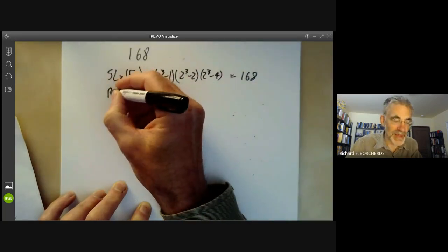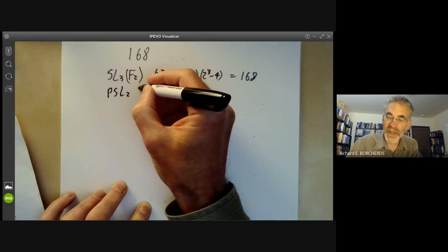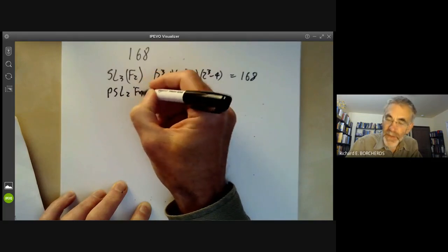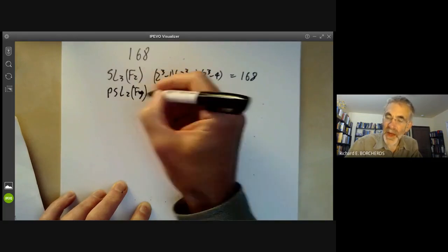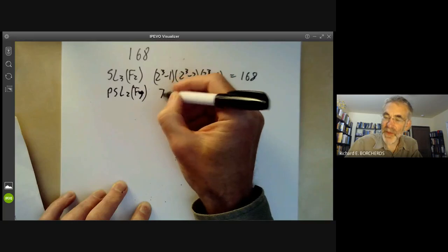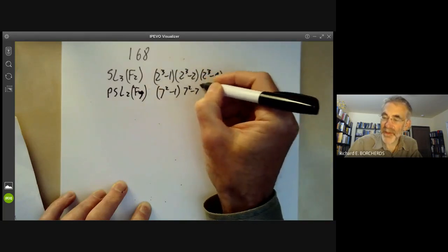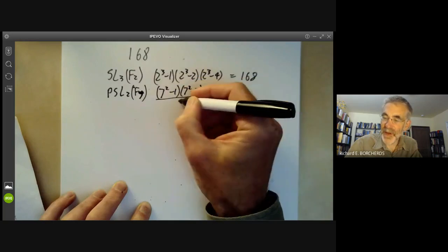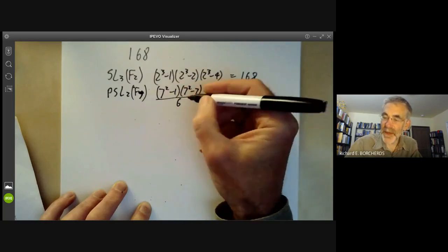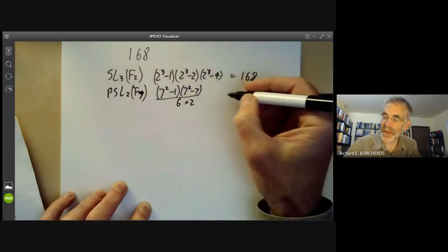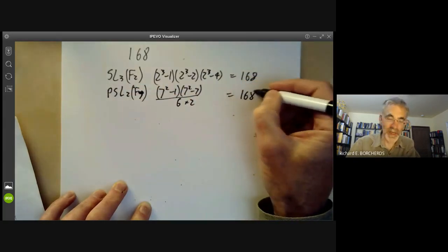And we can also take the group PSL2F7. So that's a 7, not a 4. And this is order 7 squared minus 1 times 7 squared minus 7. And then we should divide it by 6. And then we should divide it by 2 because we're taking the projective group. And this again has order 168.